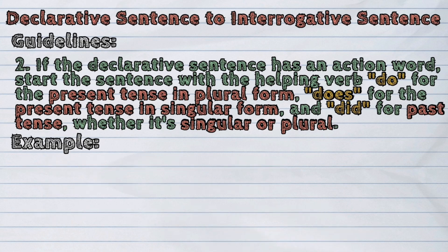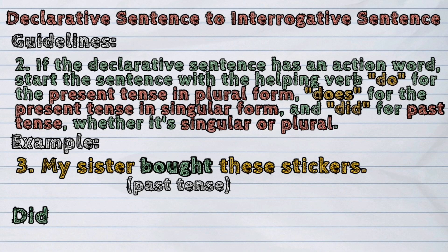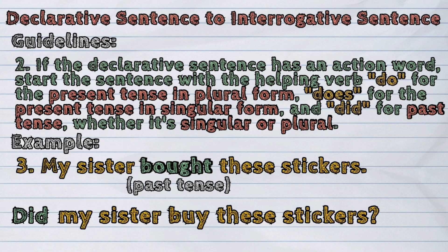Last example: My sister bought these stickers. The action word in the sentence is 'bought.' It's the past tense of 'buy,' so we will use the helping verb 'did' to start the sentence. Keep in mind that in questions, the action word that follows 'did' should be used in its base form. The base form of 'bought' is 'buy.' The sentence will now become: Did my sister buy these stickers?